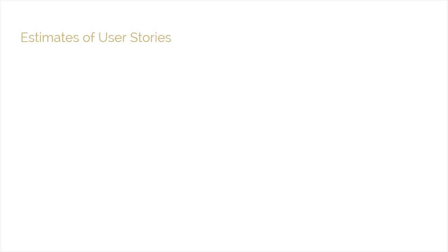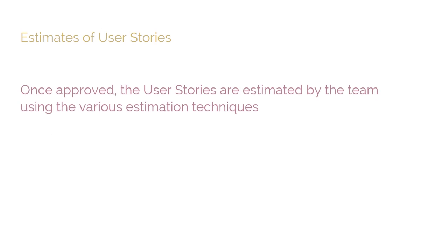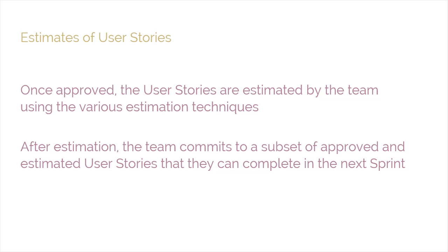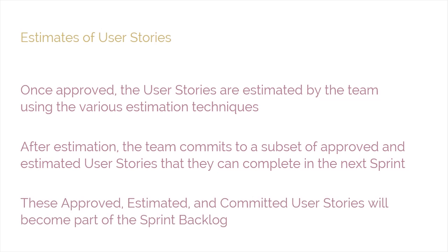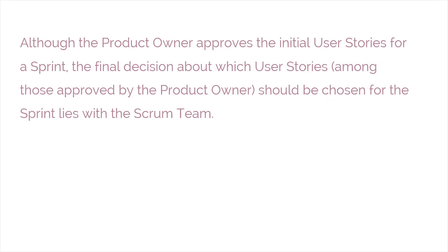Once approved, the user stories are estimated by the team using various estimation techniques. After estimation, the team commits to a subset of approved and estimated user stories that they can complete in the next sprint. These approved, estimated, and committed user stories will become part of the sprint backlog. Although the product owner approves the initial user stories for a sprint, the final decision about which user stories should be chosen for the sprint lies with the scrum team.